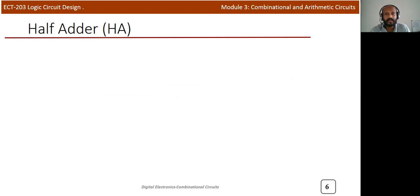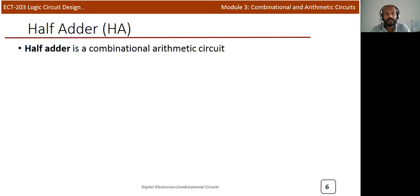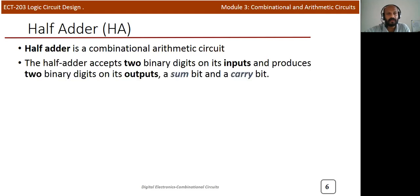Half adder: in Module 1 we already discussed binary addition. The circuit used to perform binary addition is called a half adder. It is a combinational circuit and also an arithmetic circuit, because binary addition is an arithmetic operation. A half adder accepts two binary digits as inputs and produces two binary digits as output — a sum bit and a carry bit.